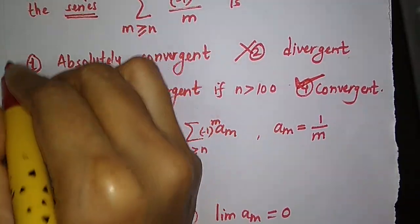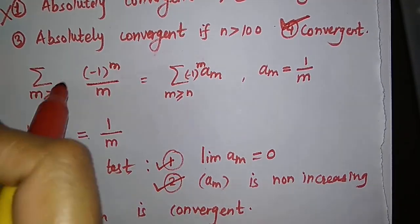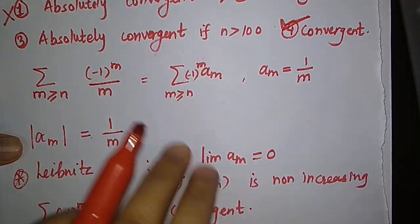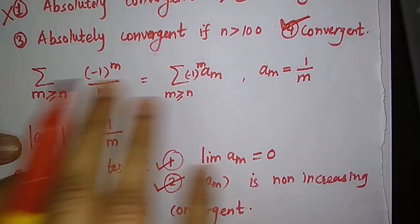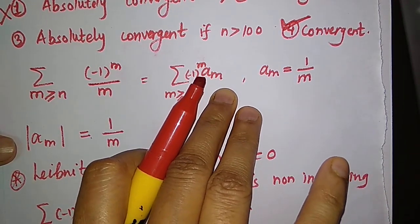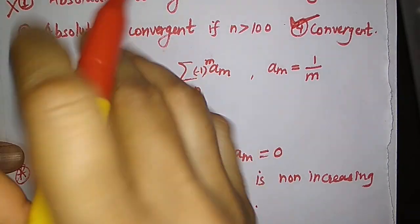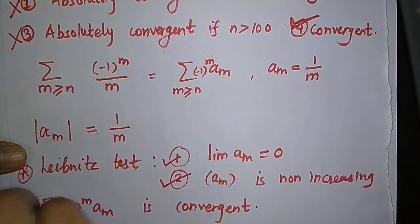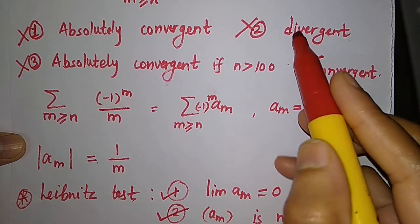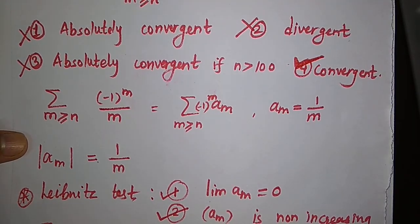This fixed n does not affect the convergence — whether we consider absolute convergence or just convergence. So the options about absolute convergence are both false. Hence the only correct option is option 4. Thank you.